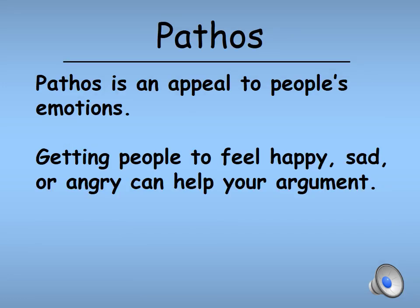Our second persuasive technique is pathos. Pathos is an appeal to people's emotions. When we use pathos, we are trying to get people to feel a certain way — happy, sad, or angry — so that it can help your argument. On the next slide, we'll look at some examples of how pathos can make things more persuasive.